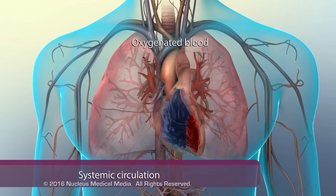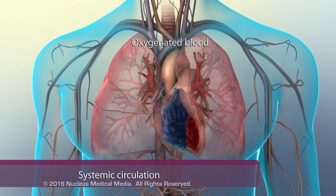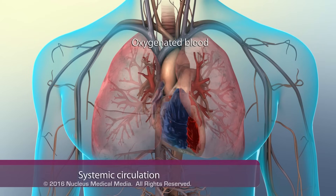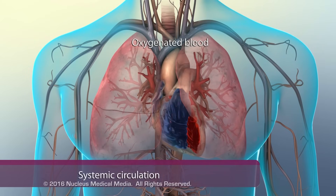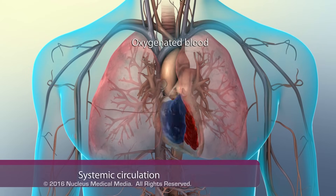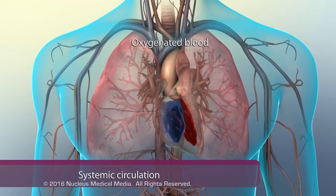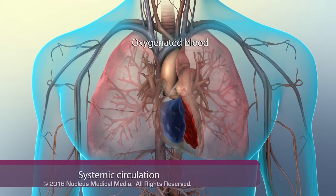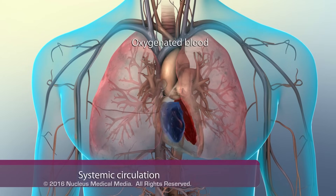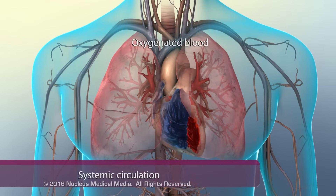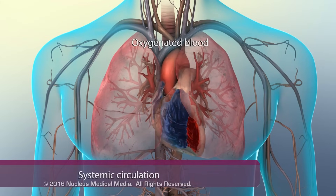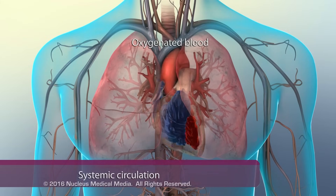The left side of the heart produces systemic circulation. This is the movement of oxygenated blood returning from the lungs to the left atrium and ventricle, and out through the aorta to be distributed to the rest of the body.